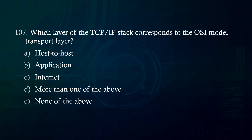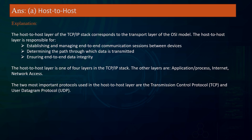Which layer of the TCP/IP stack corresponds to the OSI model transport layer? A. Host-to-host. B. Application. C. Internet. D. More than one of the above. E. None of the above. Answer: Host-to-host. Explanation: The host-to-host layer of the TCP/IP stack corresponds to the transport layer of the OSI model. It is responsible for establishing and managing end-to-end communication sessions, determining data transmission paths, and ensuring end-to-end data integrity. The four TCP/IP layers are: application/process, host-to-host, internet, and network access.